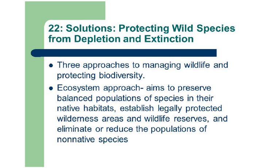What are the solutions for protecting wild species from depletion and extinction? Three approaches to managing wildlife and protecting biodiversity. Number one, the ecosystem approach: aims to preserve balanced populations of species in their native habitats, establish legally protected wilderness areas and wildlife reserves, and eliminate or reduce populations of non-native species. Non-native species are those introduced either by mistake or purposely, and which have now become a menace, taking over and destroying native species.